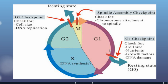Of all these checkpoints, G1 is the most important, because once this turns green, you're committing a cell to going through the entire process of mitosis. What happens with cancer cells is all of these lights are on green all the time.